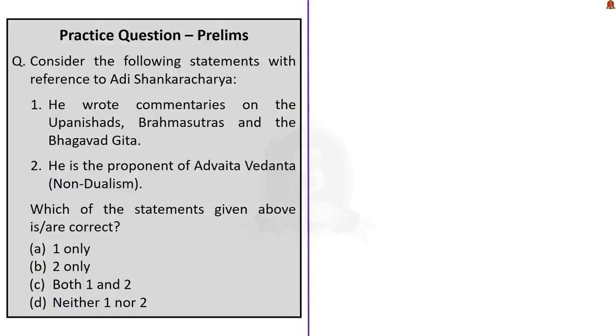This next question is based on Adi Shankaracharya topic. First statement is Adi Shankaracharya wrote commentaries on the Upanishads, Brahma Sutras and the Bhagavad Gita. This statement is correct because he wrote commentaries on these three and Shankaracharya's discourse or philosophical views came to be known as Advaita Vedanta. This makes statement 2 as correct because it mentions that he is the proponent of Advaita Vedanta. We just saw that his views came to be known as Advaita Vedanta. The question asks for correct statements, option C both 1 and 2.